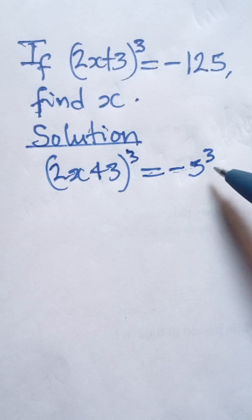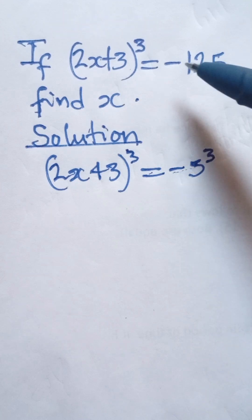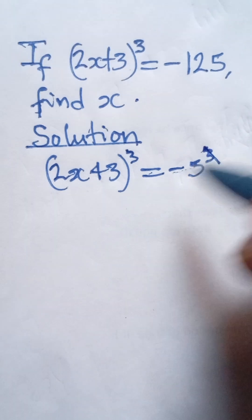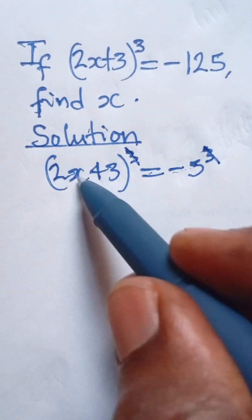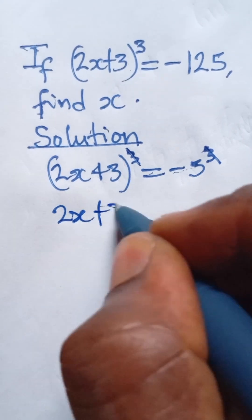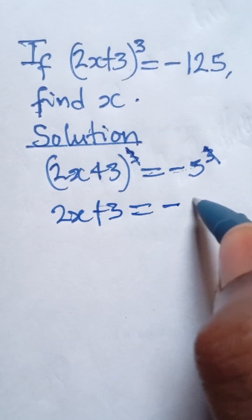So, negative 5 multiplied by itself three times will give us negative 125. Now that the powers are the same, it means the bases are also the same. So, we simply say 2x plus 3 is equal to negative 5.